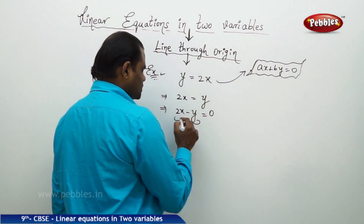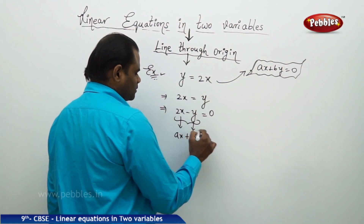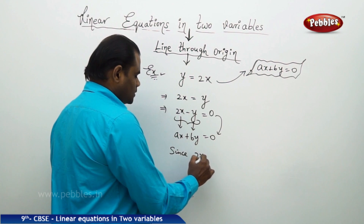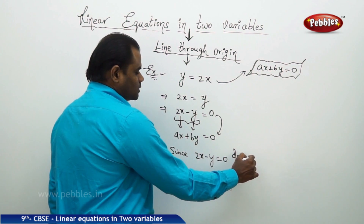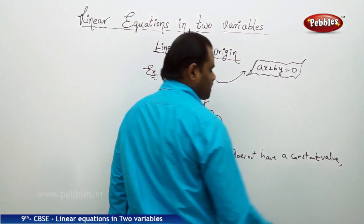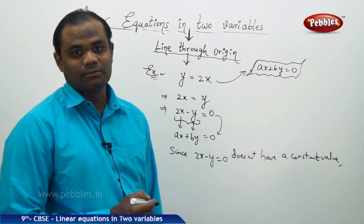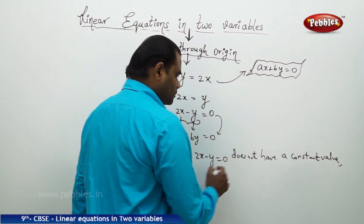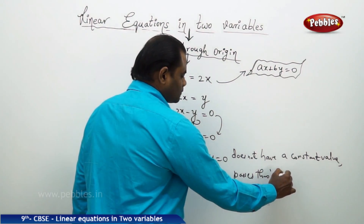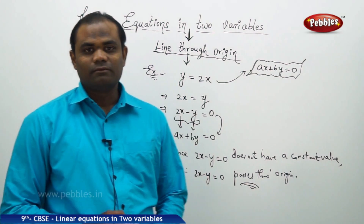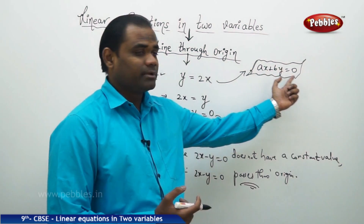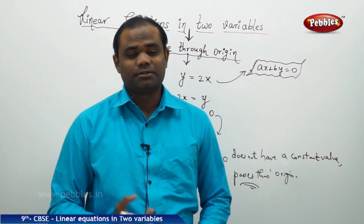Clearly, as I compare, this can be written as 2x minus y equal to 0, which is in the form ax plus by equals 0. Since 2x minus y equal to 0 does not have a constant value, therefore this must pass through origin. Since there is no constant value, 2x minus y equal to 0 passes through origin — it is a line passing through origin in the xy coordinate system, represented by ax plus by equal to 0, where the constant vanishes.